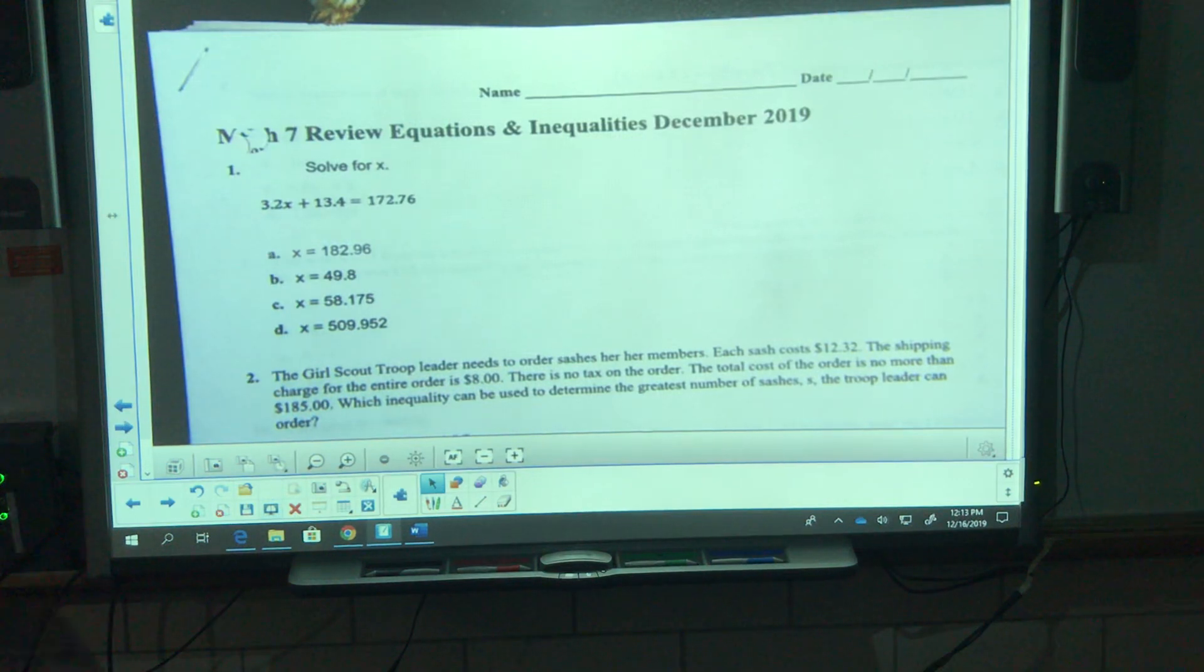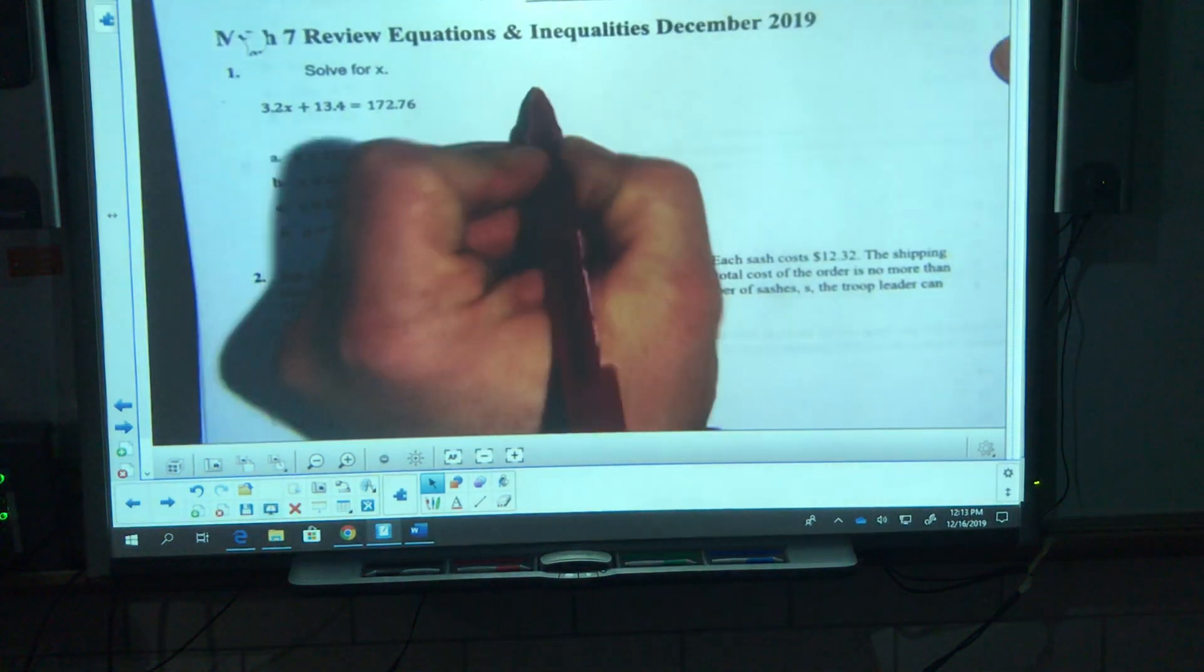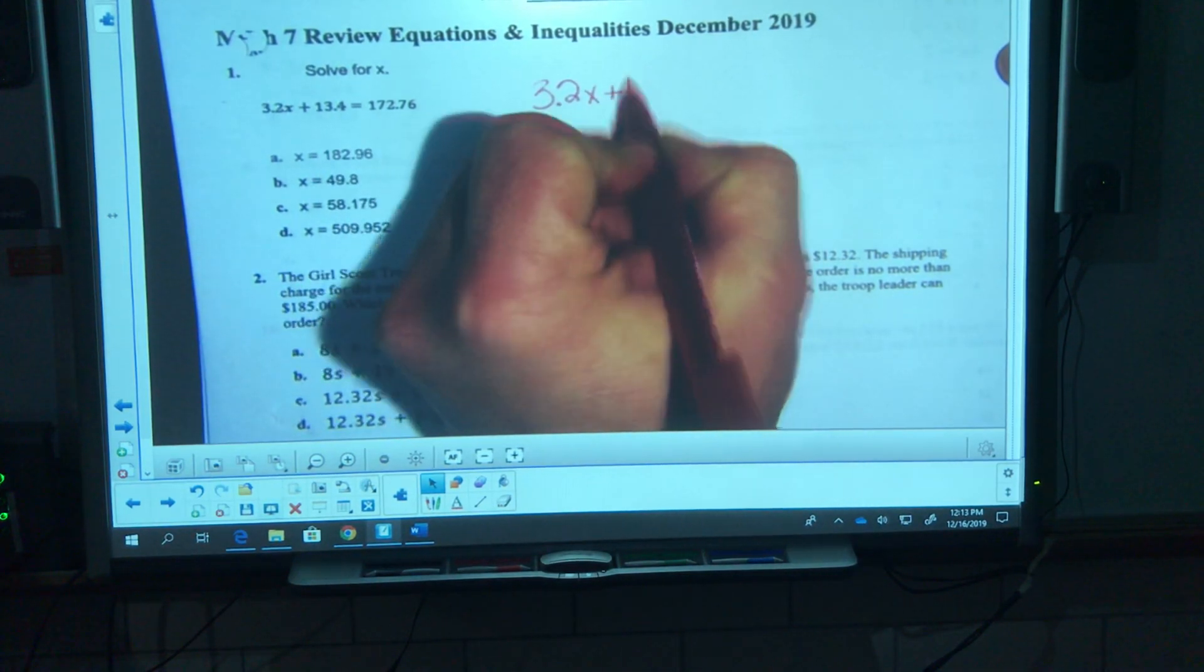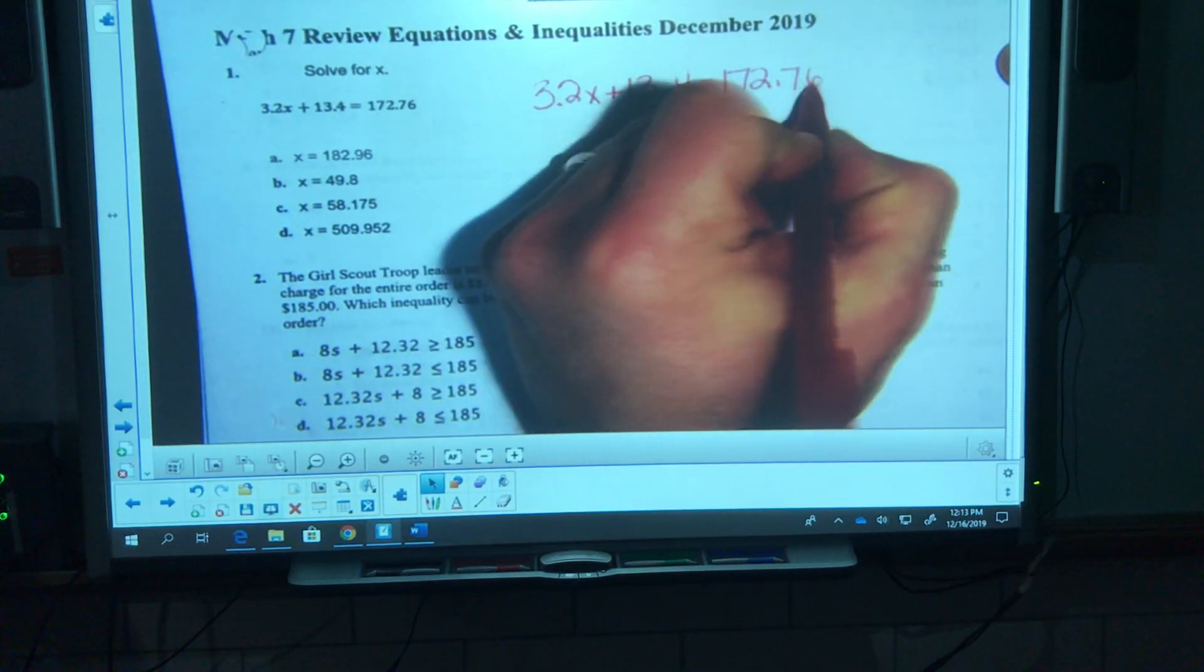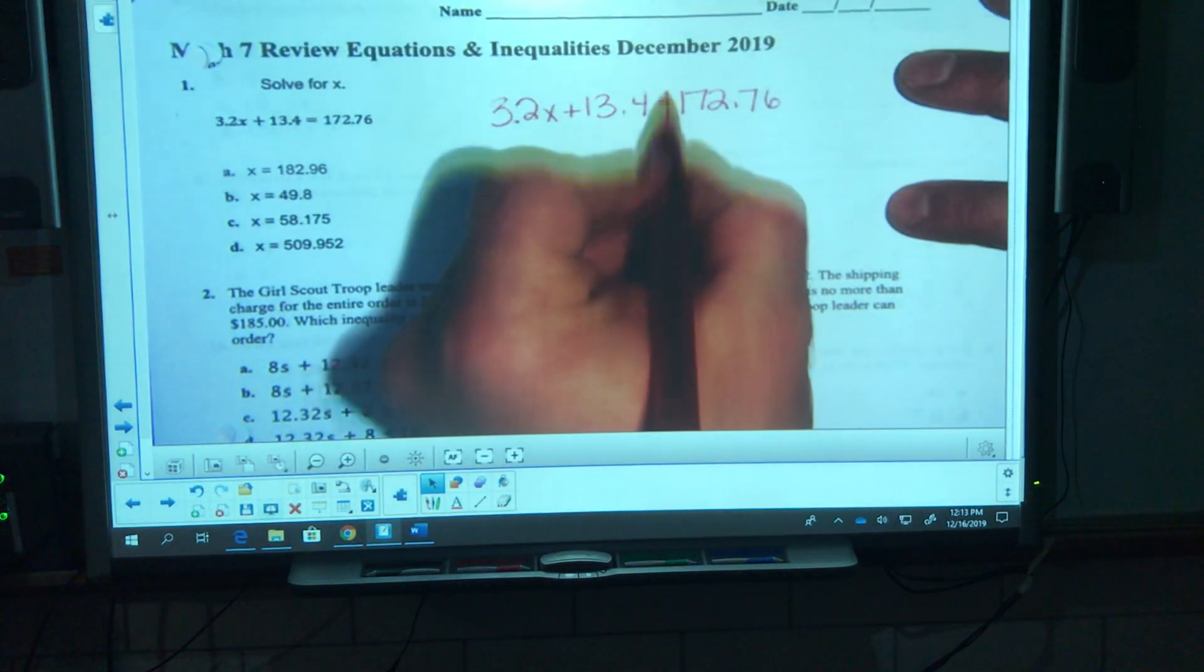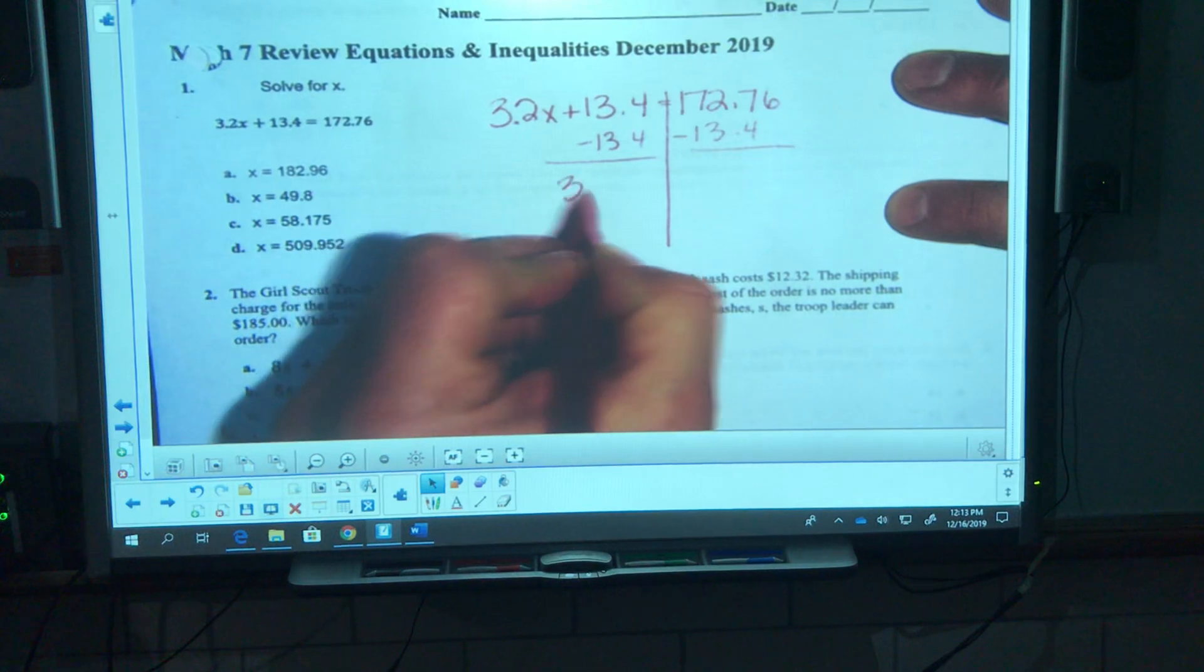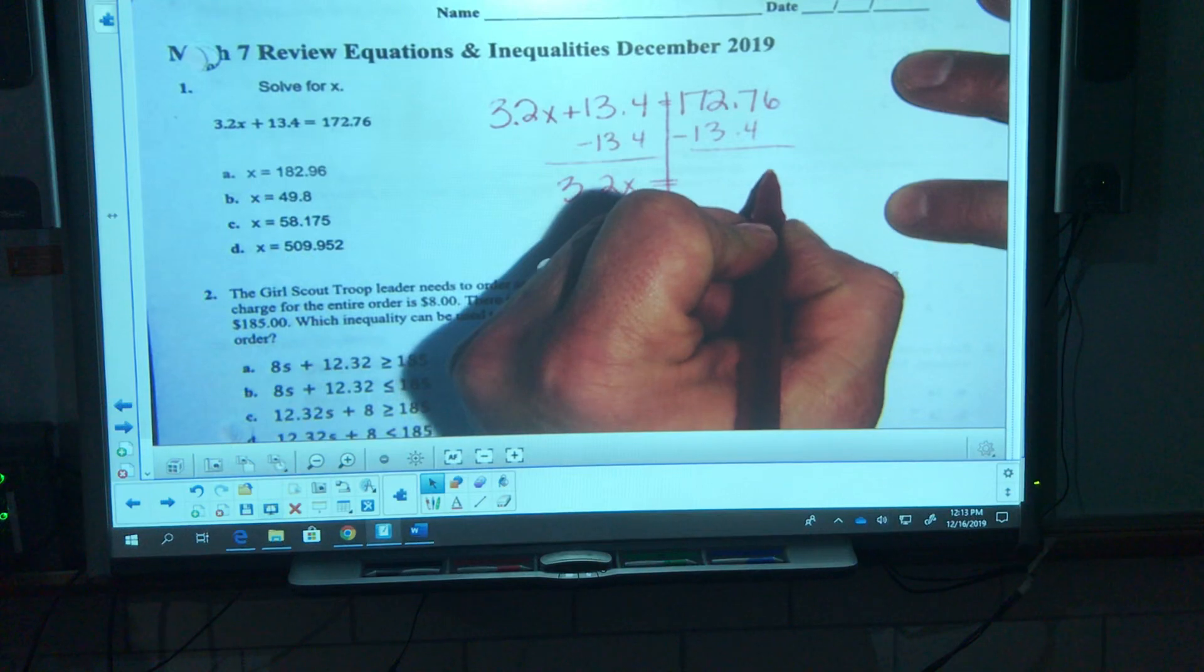All right, number one, solve for X. I'm gonna go right into it. Starting with our equation 3.2x plus 13.4 equals 172.76. If you need to, pause the video at any time. I start with my line down the middle, subtract 13.4 minus 13.4.